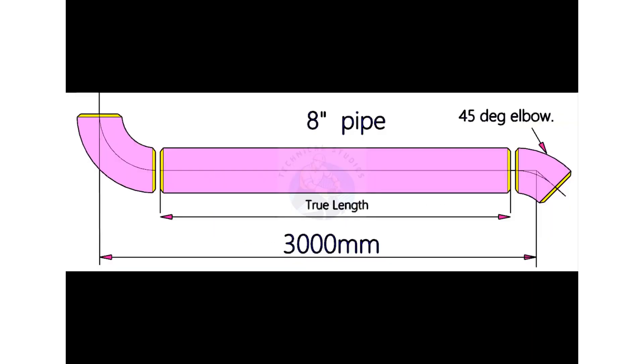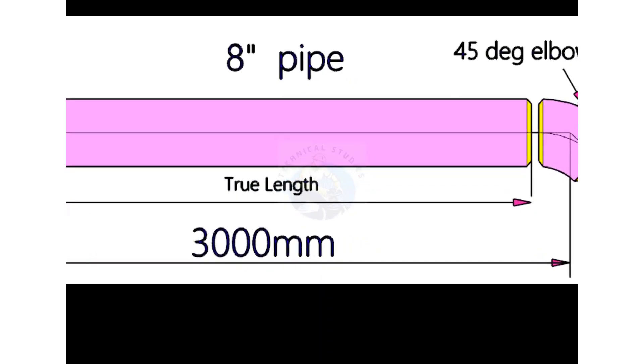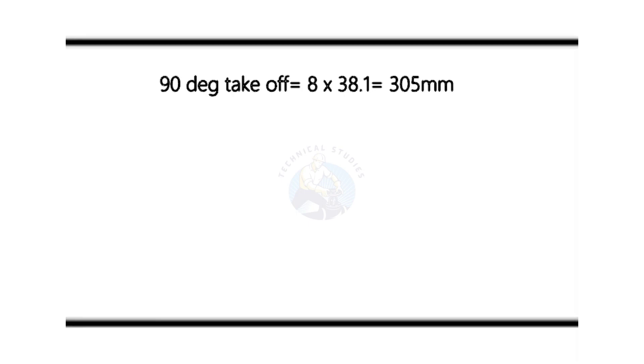Let us try another example. This piping has an 8 inch, 90 degree long radius elbow and 45 degree elbow. To calculate the takeoff of a 45 degree elbow, multiply the diameter in inches with 0.4142. Let us calculate.